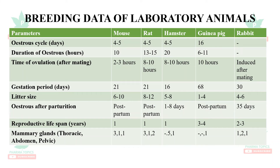Breeding data: the estrus cycle is approximately 4–5 days in mouse, rat, and hamster, and 16 days in guinea pigs. Duration of estrus is approximately 10 hours in mouse, 13–15 hours in rat, 20 hours in hamster, and 6–11 hours in guinea pig. Time of ovulation after mating is 2–3 hours in mice, approximately 10 hours in rats, hamsters, and guinea pigs, and ovulation is induced soon after mating in rabbits.